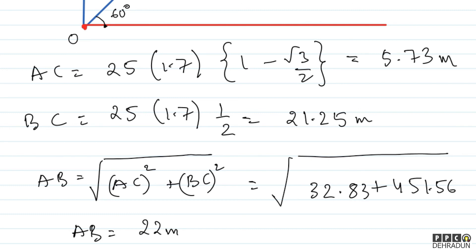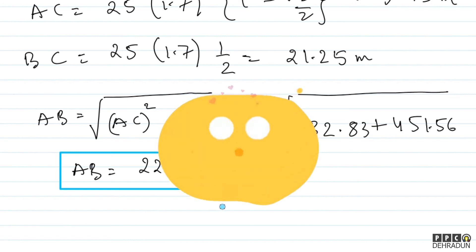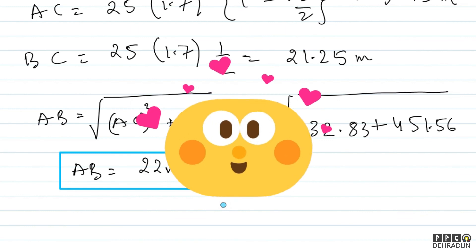So our final answer: the separation between the two bodies after 1.70 seconds is 22 meters. I hope you will be able to solve this. In case you have any doubts, feel free to contact us — we will be very happy to help you. Take care, bye-bye.